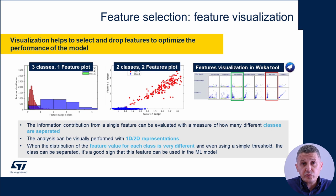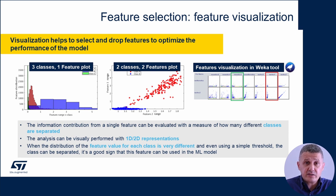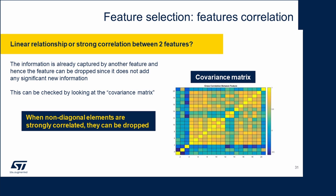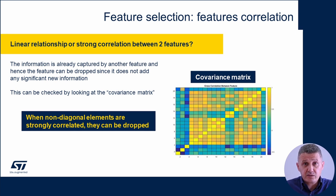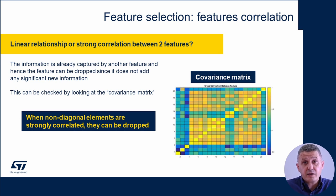In general, it's extremely useful to plot the features on a 1D or 2D axis. This will help us select the features for our machine learning model. When plotting specific features, we can clearly separate different classes — separation means those features are bringing useful information to the model. There is also the covariance matrix, which shows the correlation between different features. If two features have a linear correlation, they bring the same information, so we can drop one of them.